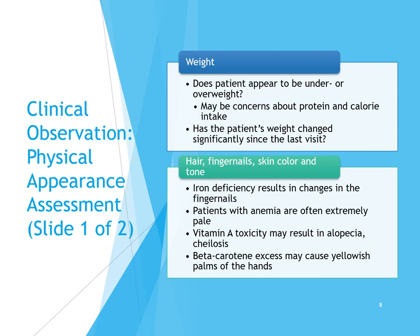Vitamin A toxicity — too much vitamin A — can cause alopecia (hair loss) and cheilosis. Beta carotene excess can cause a yellowish tint to the palms of the hands. I actually knew a dental hygienist who ate an entire bag of carrots with mustard every day for lunch, and the palms of her hands were noticeably orange-tinted. She knew she had too much beta carotene but loved carrots and kept eating them.